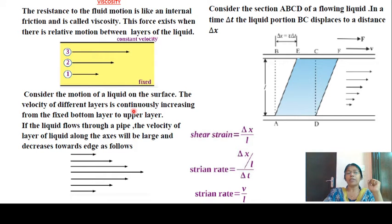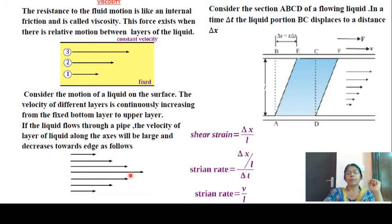The velocity of different layers continuously increases from the fixed bottom layer to the upper layer. Through a pipe, the velocity of a layer of liquid along the axis will be maximum and decreases towards the edges. This is an expression of viscosity.